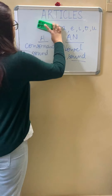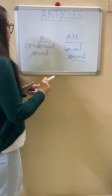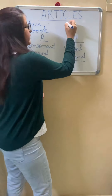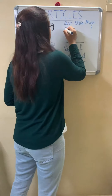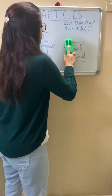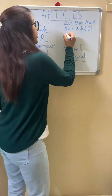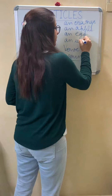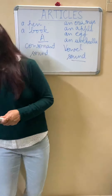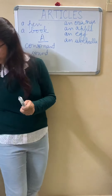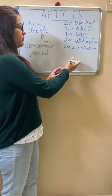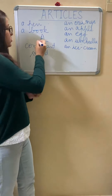For example, a can be used with: a pen, a book. And an is used with: an orange, an apple, an umbrella, an egg. For the vowel i, an ice cream. So for all vowel sounds, use the article an, and for all consonant sounds, use the article a.